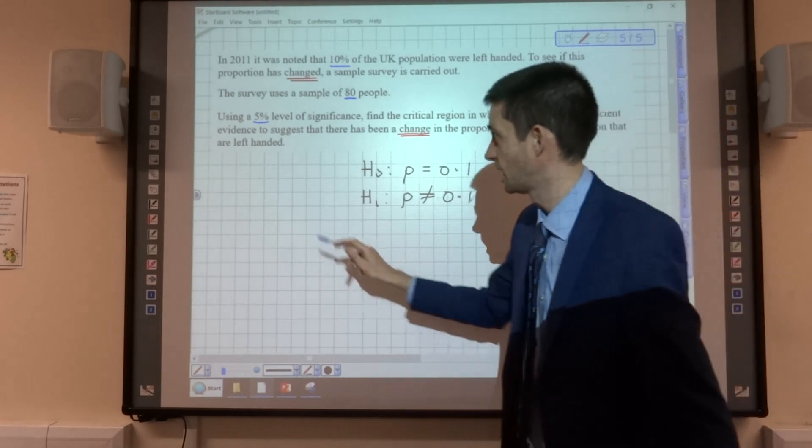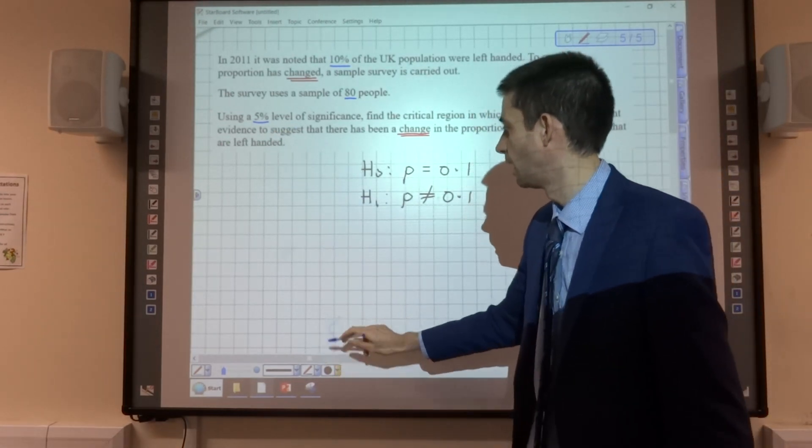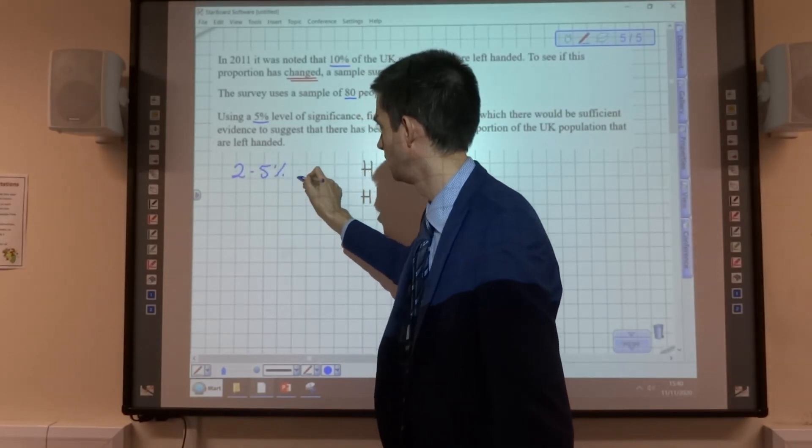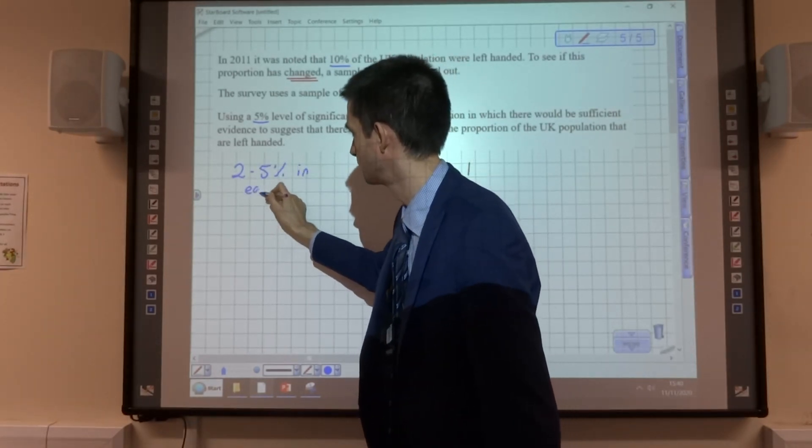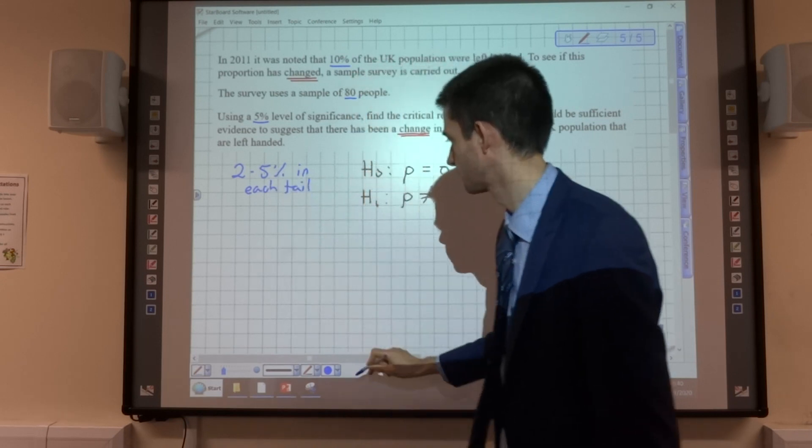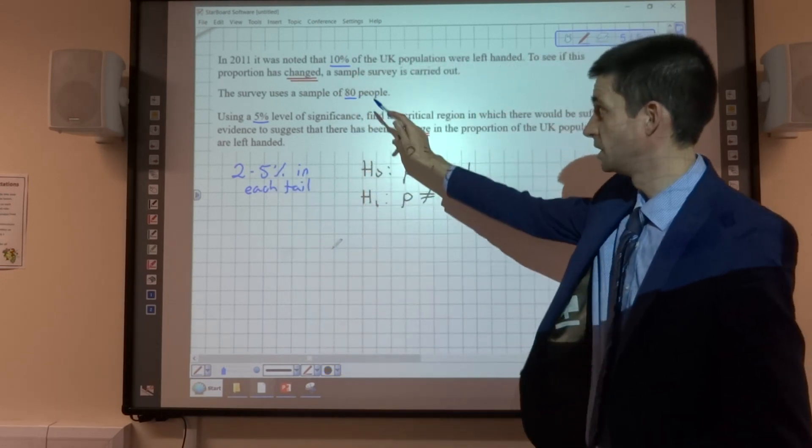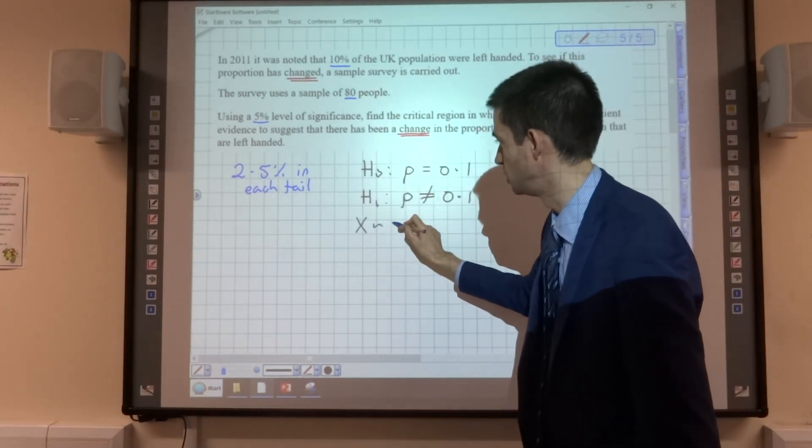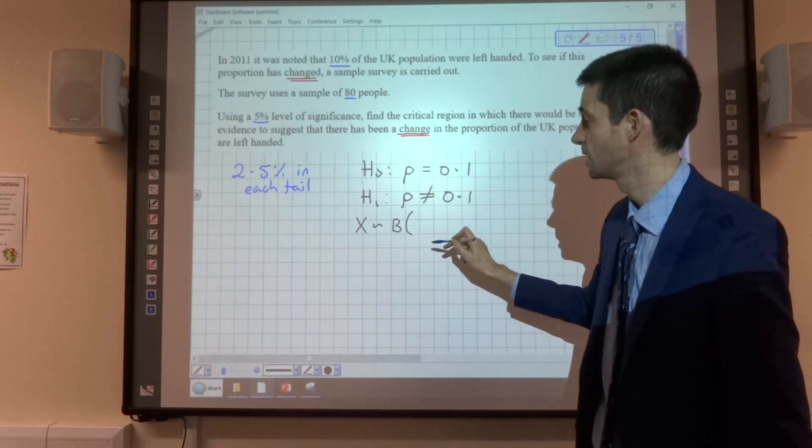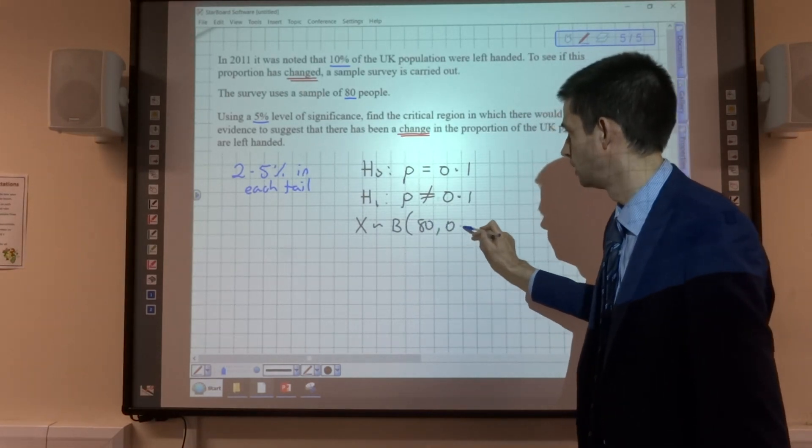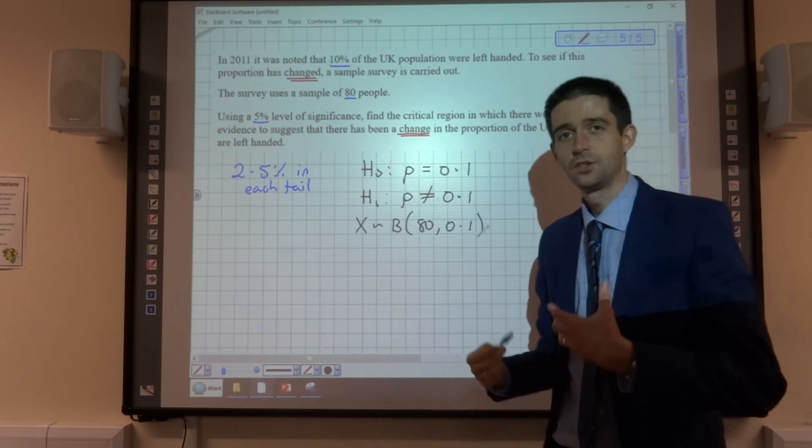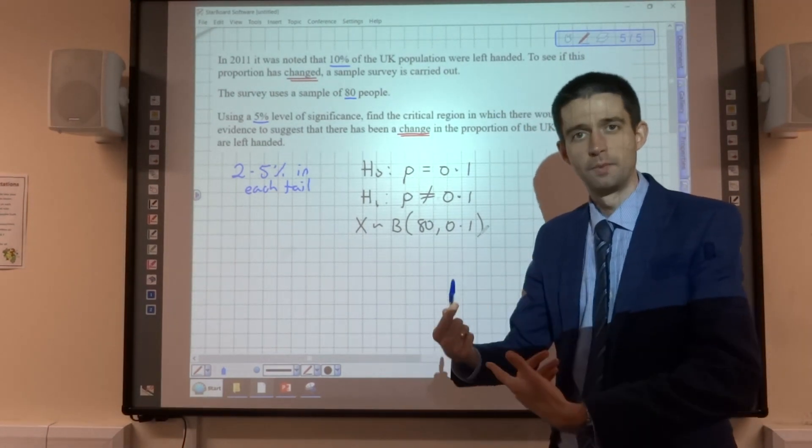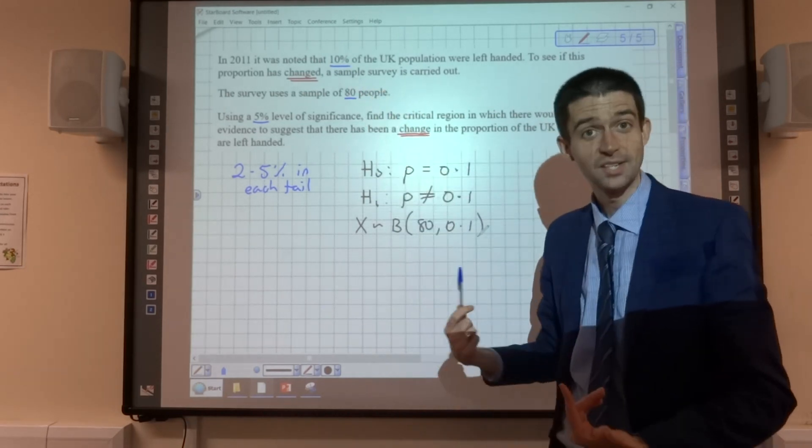Now, because we're doing a two-tailed test, we're going to halve the significance level, and we're going to be testing 2.5% in each tail. We're going to be using a sample size of 80, so the binomial distribution we're going to be using for our calculations is X follows the binomial 80, 0.1, so 80 people in the sample, 0.1, the probability we're going to use for calculation, because that's the null hypothesis testing.